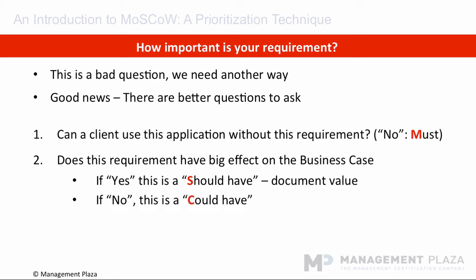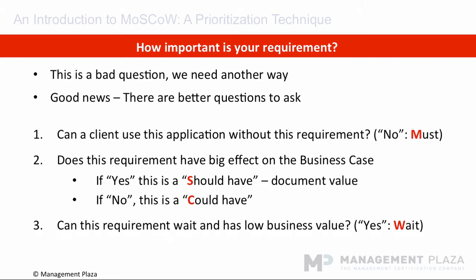And last: can this requirement wait and does it have low business value? You can ask: what value will it bring? For example, a feature to save user searches — we find out that this is of interest to only about 5% of users and will not save much time anyway, as it's so easy to create new searches. So we mark this down as won't have for now, but this might change in the future if more and more users want this and it becomes more complicated to create searches. Remember that 45% of the functionality in the typical software application is never used.